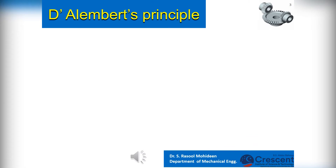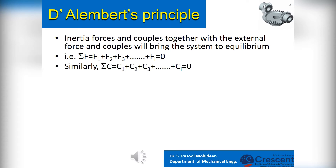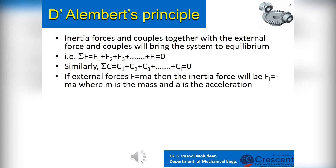According to D'Alembert's principle, inertia forces and couples together with the external forces and couples will bring the system to equilibrium. That is, summation of forces F equals F1 plus F2 plus F3 plus so on plus FI equals zero. Similarly, summation of couples C equals C1 plus C2 plus C3 plus so on plus CI equals zero. If the external forces equal M into A, then the inertia force will be FI equals minus M into A, where M is the mass and A is the acceleration.